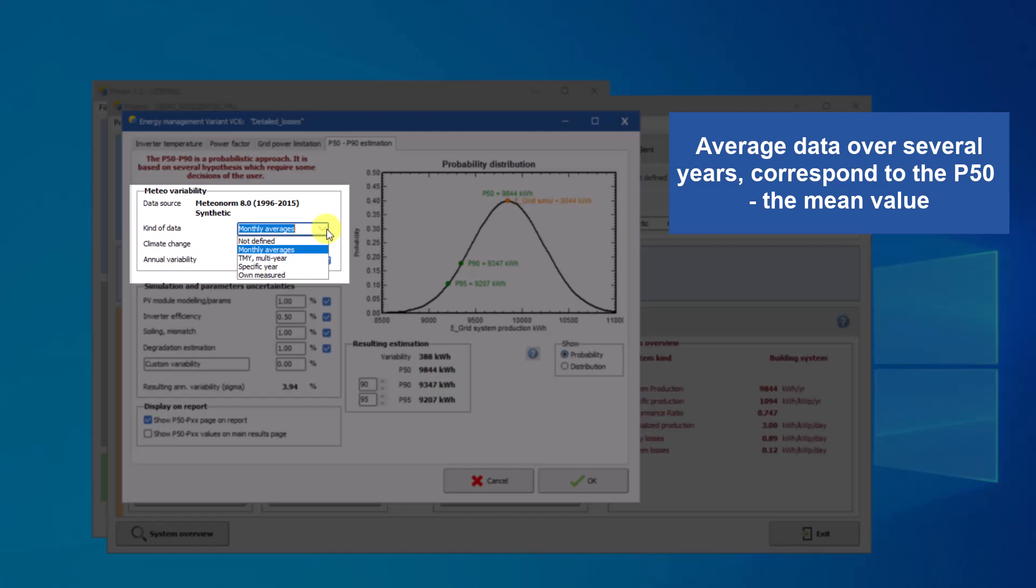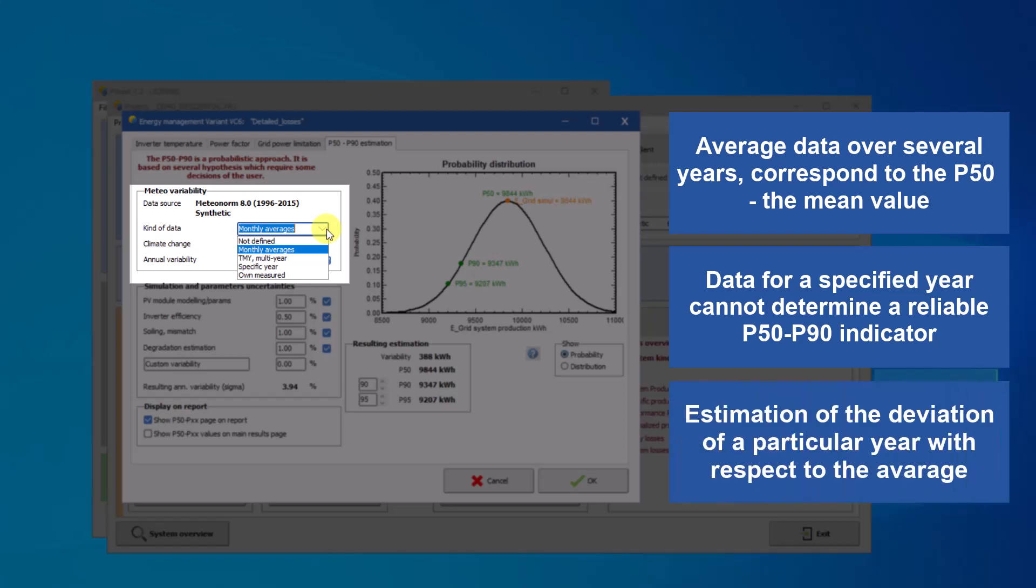If the data are for a specified year, these cannot be considered as representative for the P50 value. In absence of further information, you cannot determine a reliable P50-P90 indicator. But if you have some information about the usual average of the site, you can introduce an estimation of the deviation of this particular year with respect to the average.